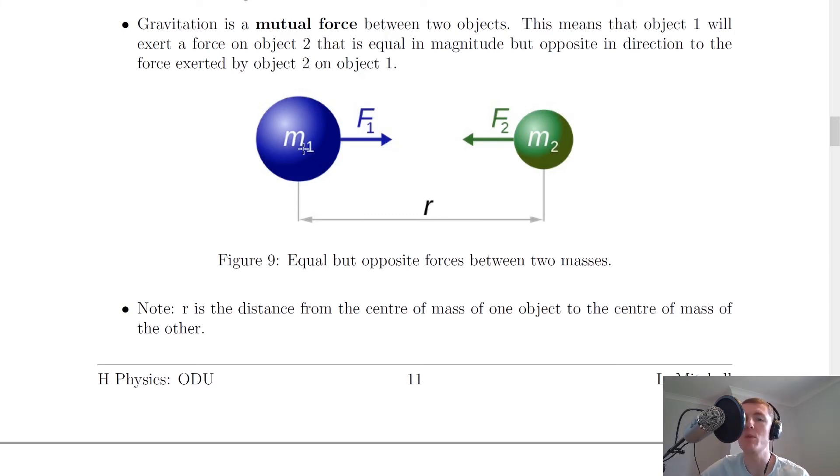You can see from the picture here, we've got two different masses, m1 and m2, separated by a distance r. We've got the force f1 acting this way and the force f2 acting this way. So force f1 will act on mass m2 due to m1, and force f2 will act on m1 due to m2.